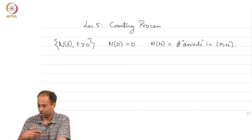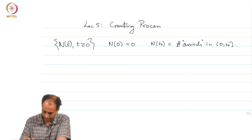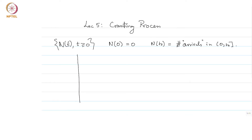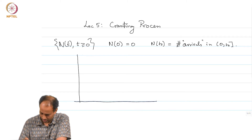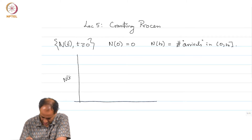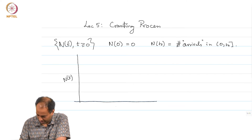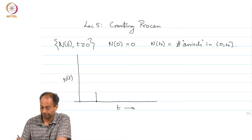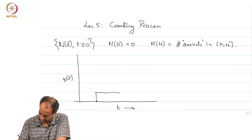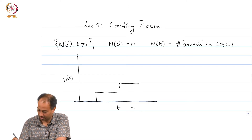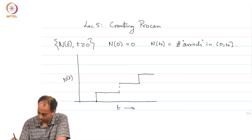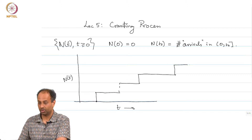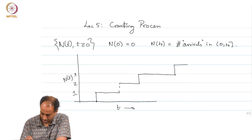N(t) takes non-negative integer values. A particular sample path could look like this — plotting N(t) against t, starting at 0. The first arrival might occur at some point, then N(t) jumps by 1 unit and stays constant. Then another arrival comes, it jumps by 1 more, and so on — 1, 2, 3, 4, and so on.